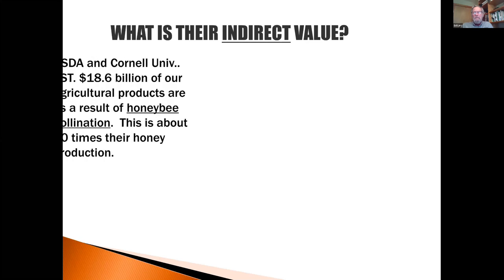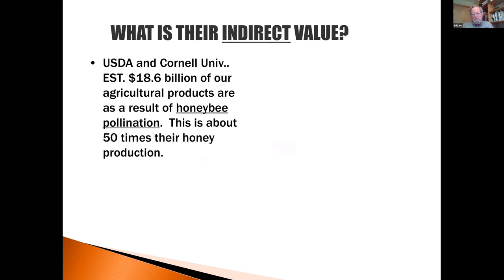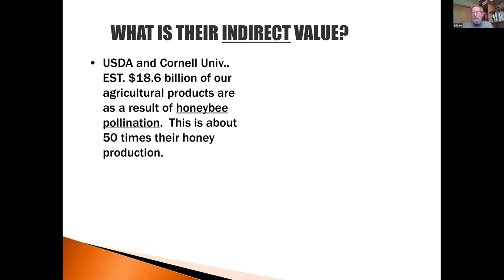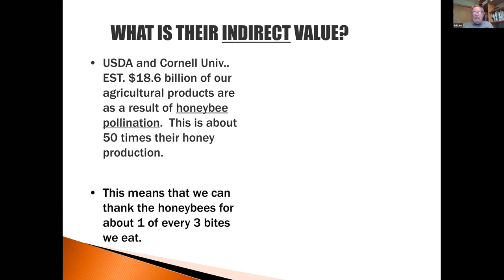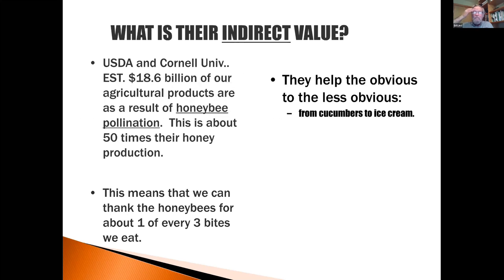Their indirect value is something else. Back in 2006, the USDA, with the help of Cornell University, estimated about $18.6 billion of our agricultural products are a result of honeybee pollination — 50 times more than the value of honey. Bees produce a lot of the food that we eat, the food that we feed to animals, and the food that supports other animals. Basically, we can thank bees for one out of every three bites that we eat.